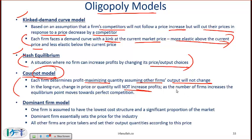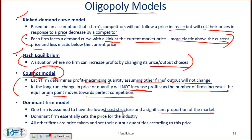As the number of firms increases, the equilibrium point according to the Cournot model moves towards perfect competition. In the dominant firm model, one firm is assumed to have the lowest cost structure and a significant proportion of the market. The dominant firm essentially sets the price for the industry, and all other firms are price takers that set their output quantities according to this price.